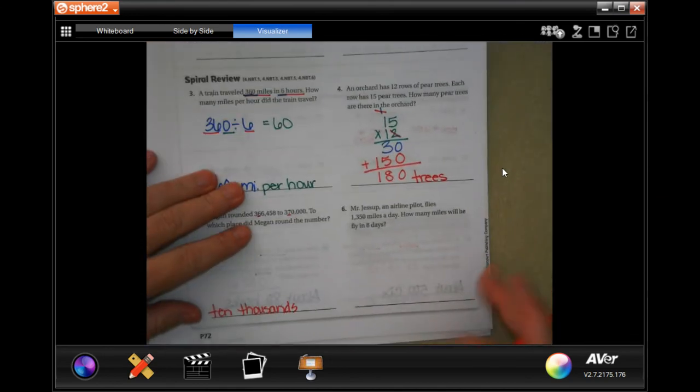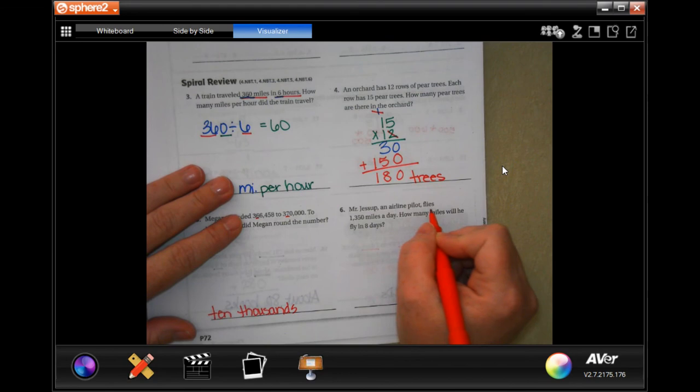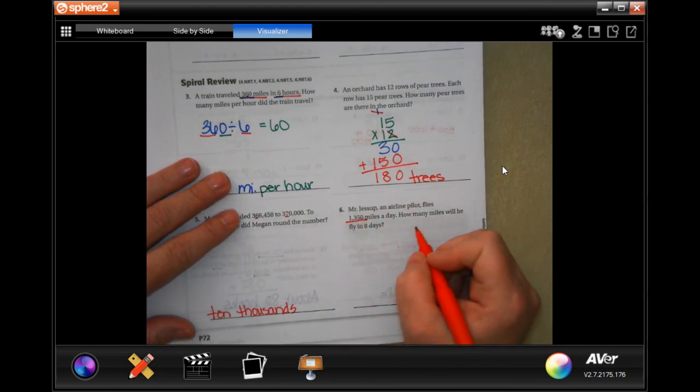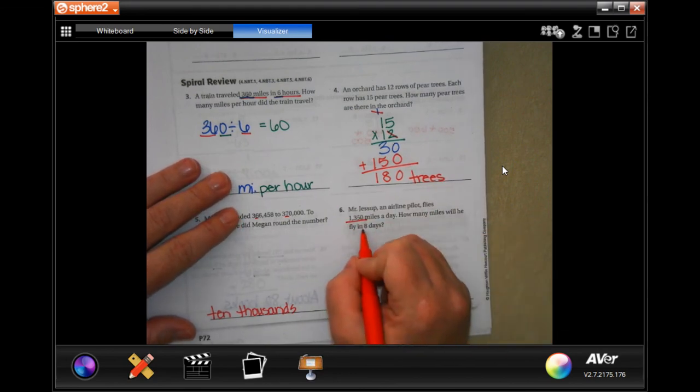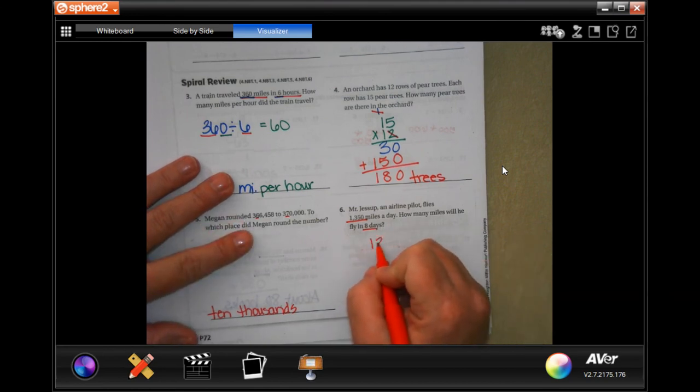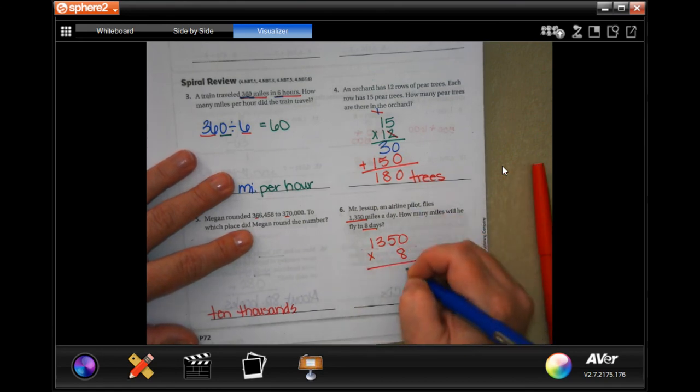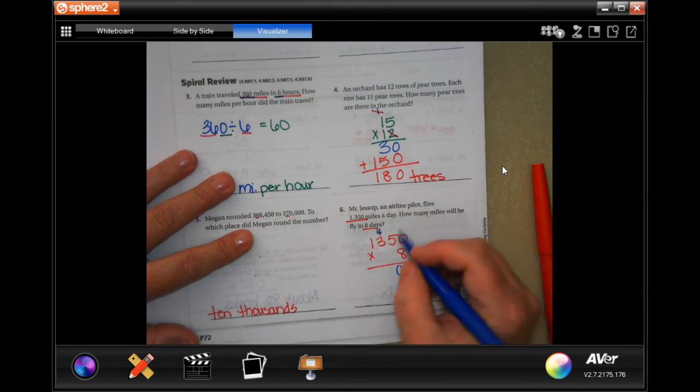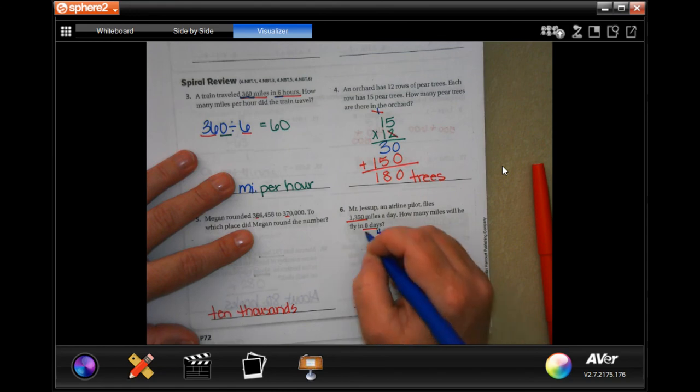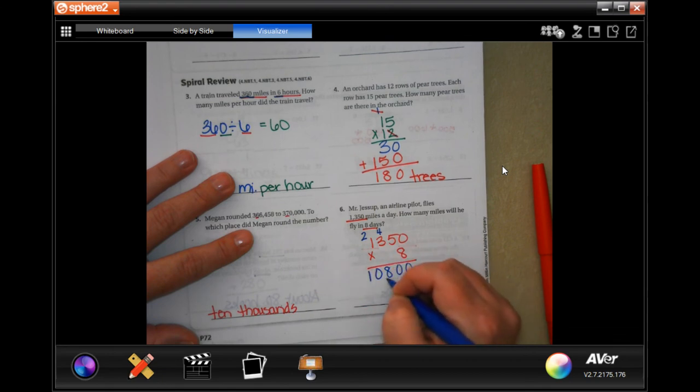Mr. Jessup, an airline pilot, flies 1,350 miles a day. How many miles will he fly in eight days? All right, ready? 8 times 0 is 0, 8 times 5 is 40. Carry that 4. 8 times 3 is 24. Carry, or sorry, add the 4 for 28. 8 times 1 is 8, plus 2 more. 10,800 miles.